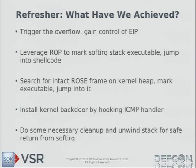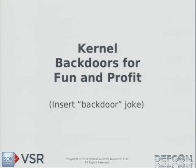Let's review what we've done so far — that's the end of the exploitation phase. We triggered the overflow, gained control of the instruction pointer, leveraged return-oriented programming to mark the soft IRQ stack executable, jumped into a shellcode stub on the soft IRQ stack. Due to space limitations, we found the entire ROSE frame on the kernel heap, marked it executable, and jumped into it. We installed our kernel backdoor by hooking the ICMP handler, then did cleanup to keep the kernel running. Now let's talk about the backdoor.